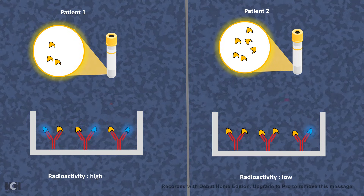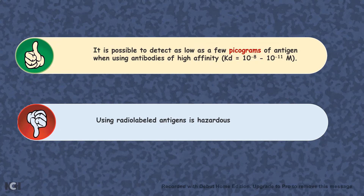Based on these observations we can clearly understand a quantitative measurement about a patient sample. On the upside, it is a very sensitive process and it is possible to detect as low as a few picograms of antigen, provided your antibody is very good. The downside is that it uses radioactive materials, which could be hazardous.